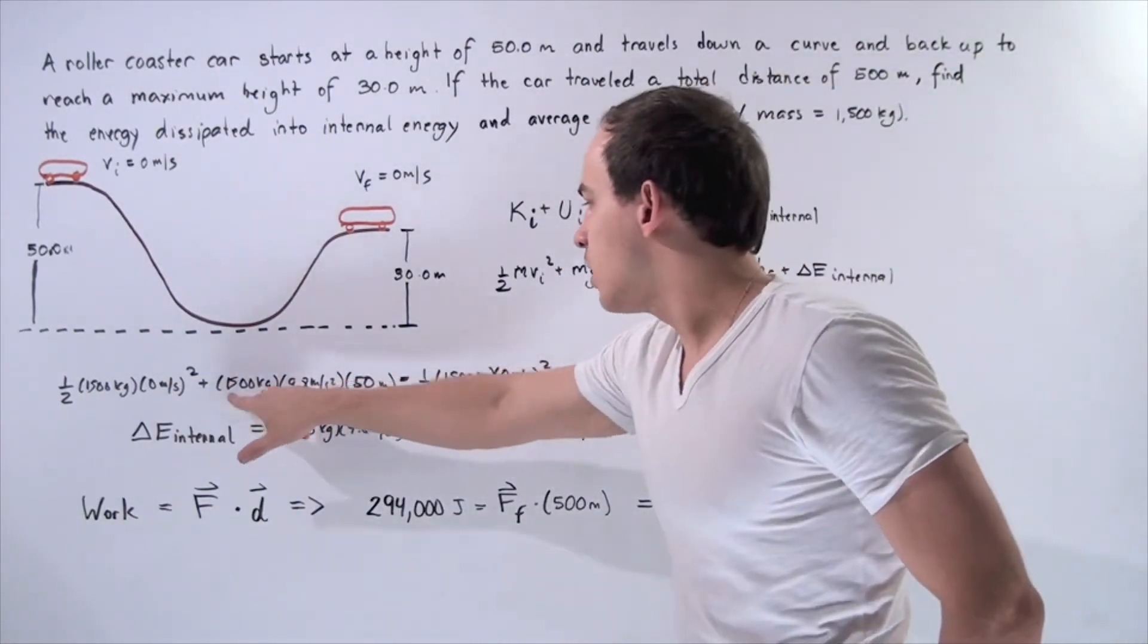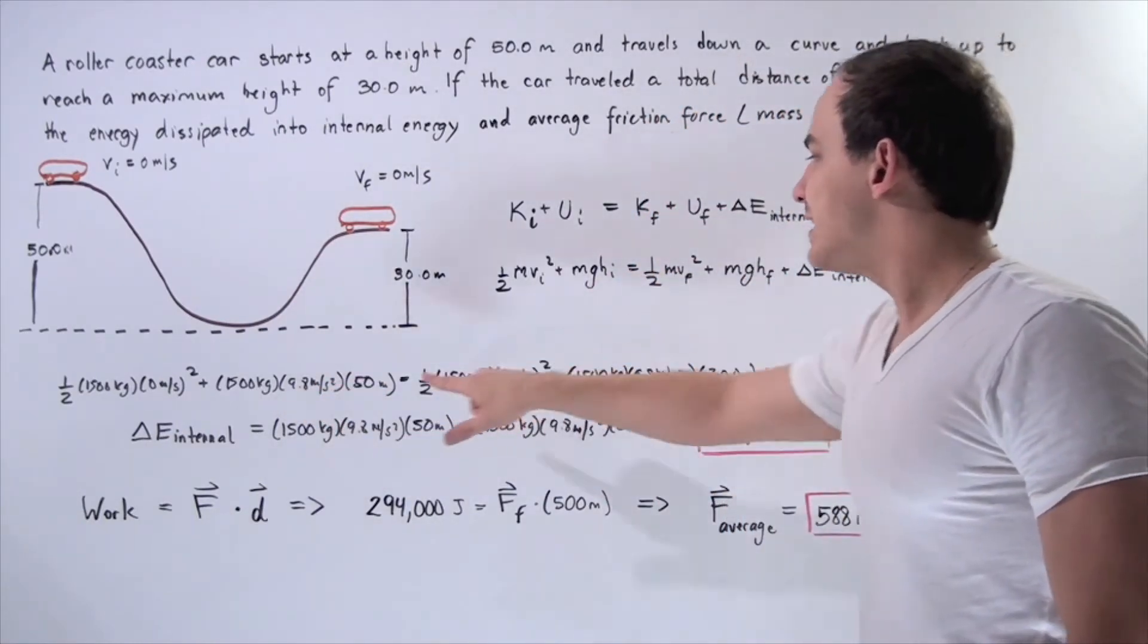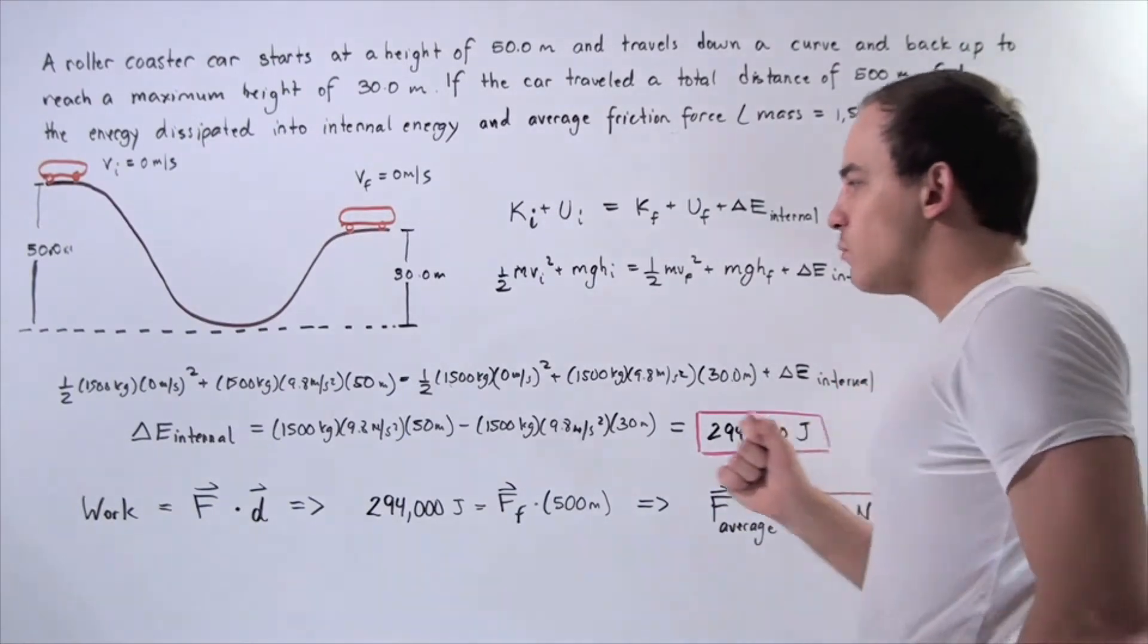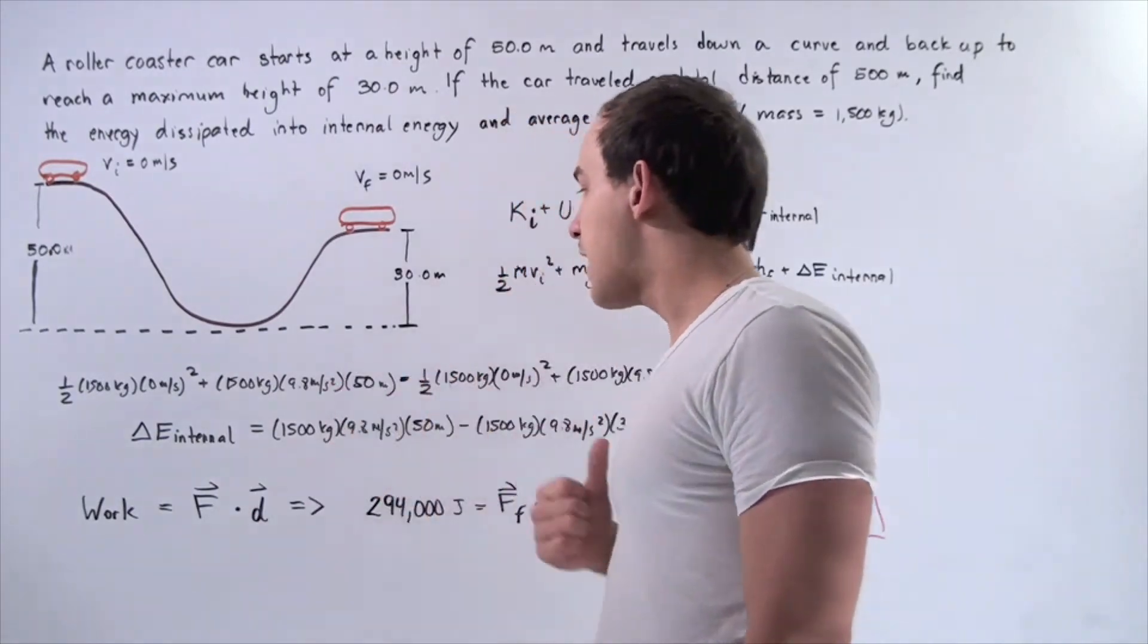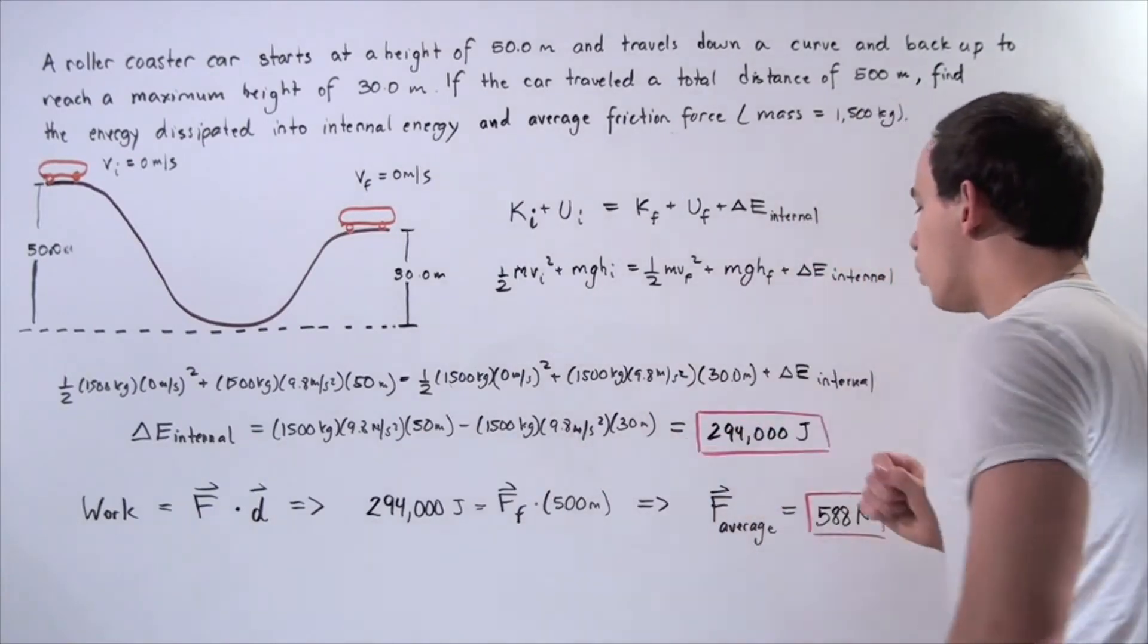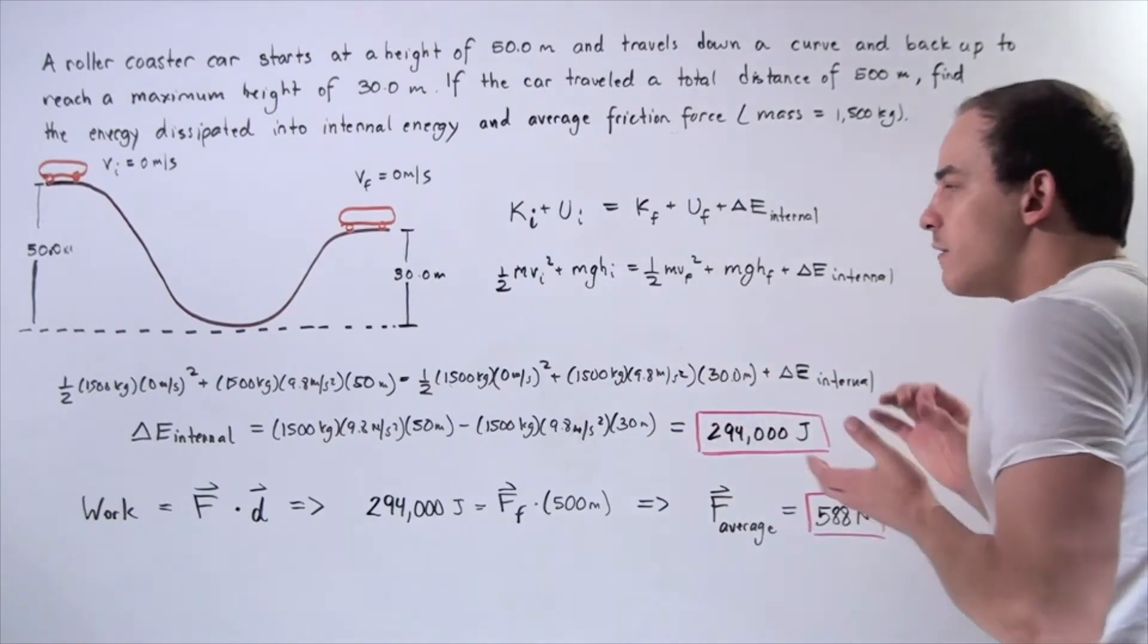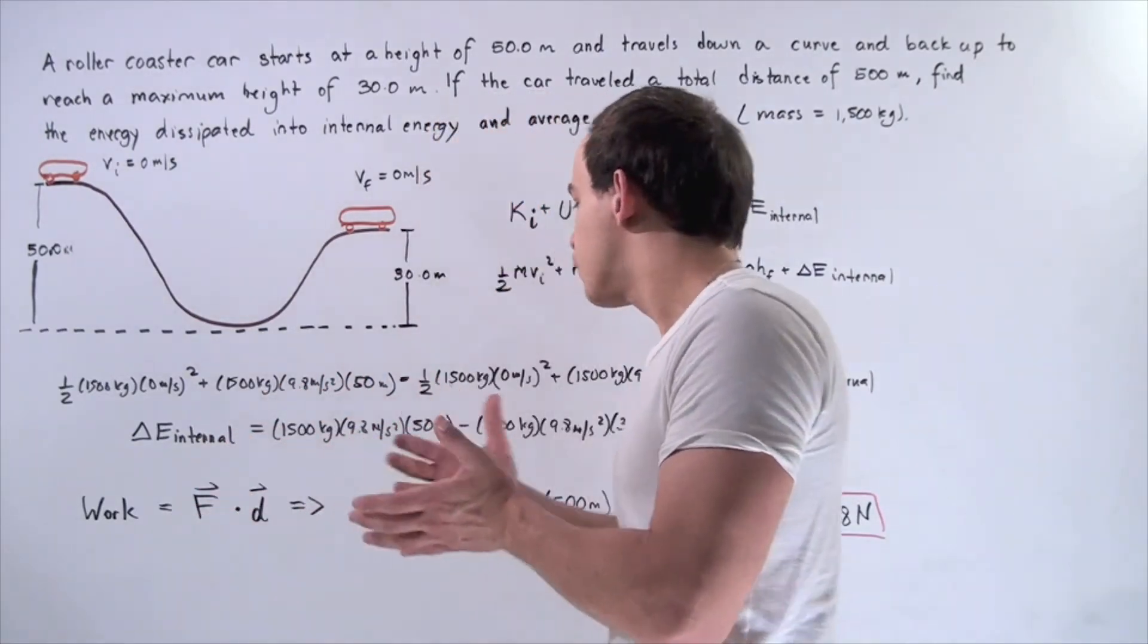m is 1,500 kilograms, g is 9.8 meters per second squared, h_i is 50 meters, and h_f is 30 meters. We solve for the unknown, and we see that change in thermal energy or change in internal energy of our system equals 294,000 joules of energy. This is how much energy is transformed from gravitational potential energy into thermal energy due to friction.